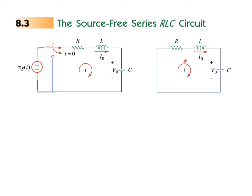The current in the circuit is driven by the charges stored in the inductor and capacitor. At T equal to zero minus, the voltage to which the capacitor is charged is called V₀, and the steady-state current through the inductor is called I₀. Always keep in mind: for a capacitor we talk of voltage, and for an inductor we talk of current.